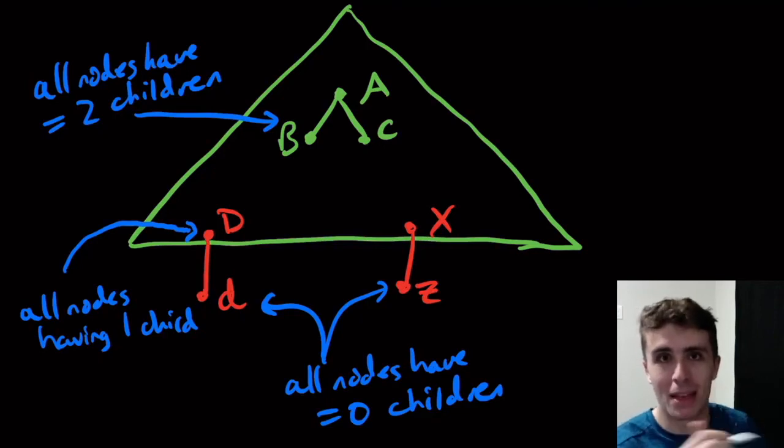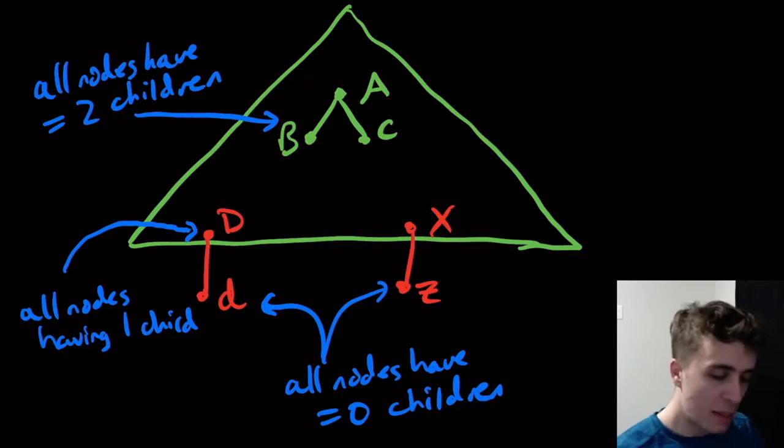So the terminals have zero children because you can't replace a terminal with anything in a context-free grammar. So the terminals are at the end of the line. They're the terminals, so to speak, of the parse tree.